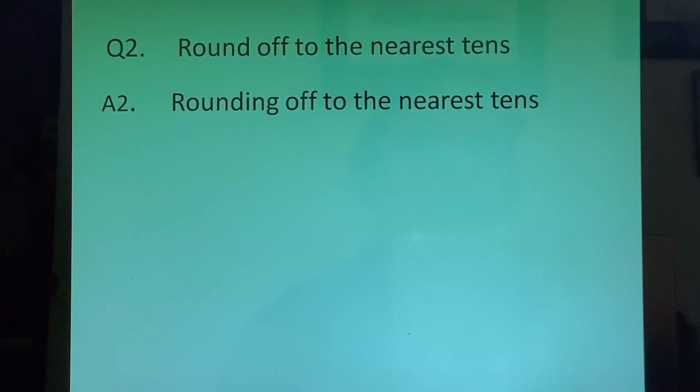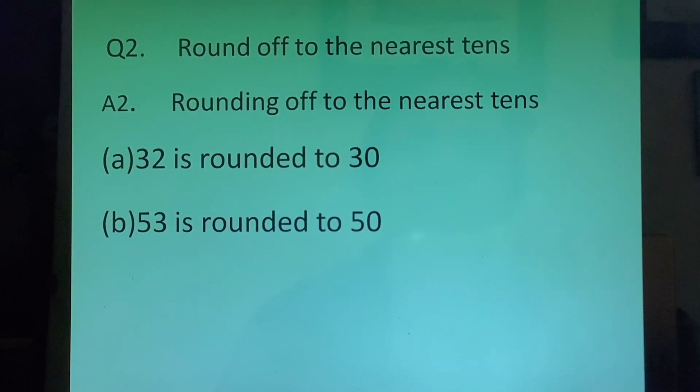Round off to the nearest tens. A part 32 is rounded to 30 because 2 is less than 5 so 3 remains 3. Next one 53 is rounded off to 50 because 3 is also less than 5. C part 185, now 5 is the center point. But 5 is always rounded off to the upper limit so we will get 190.